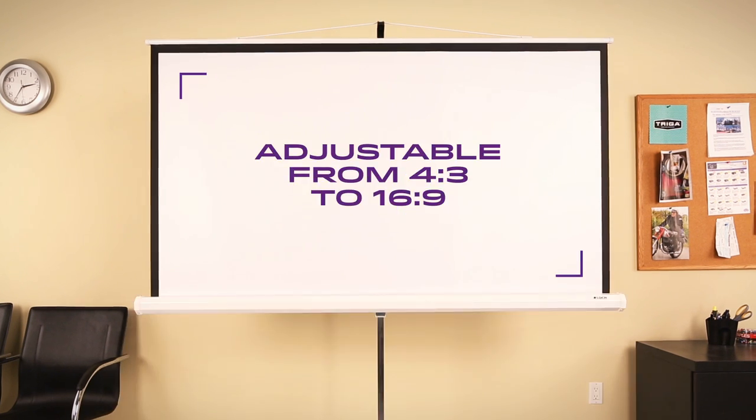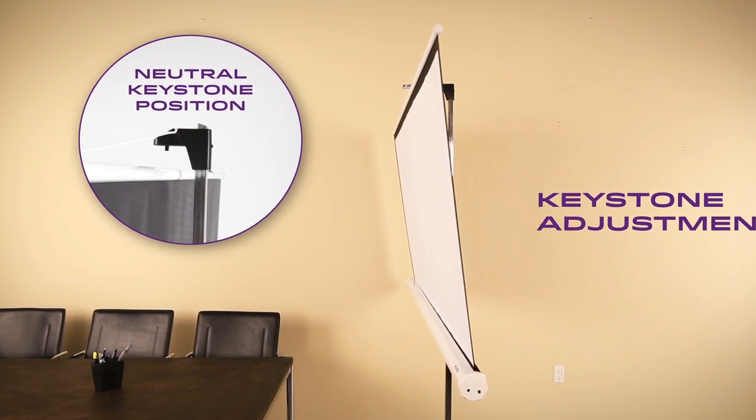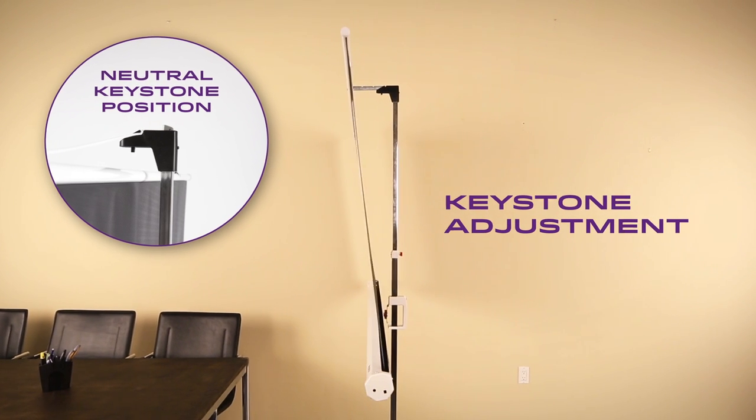The screen is adjustable up and down to accommodate your room height and can be adapted from 4 by 3 to a 16 by 9 aspect ratio. The keystone eliminator feature allows for easy adjustment for projector placement, providing a proportional projected image.